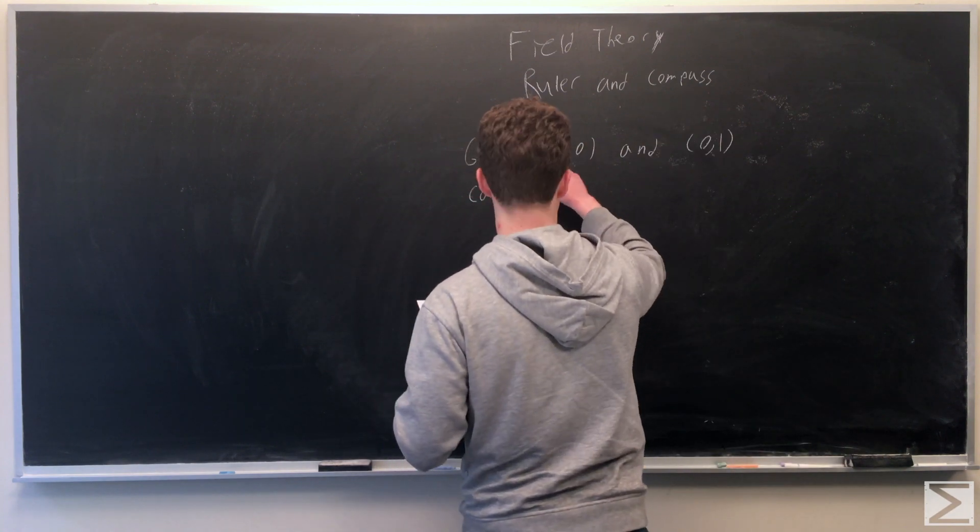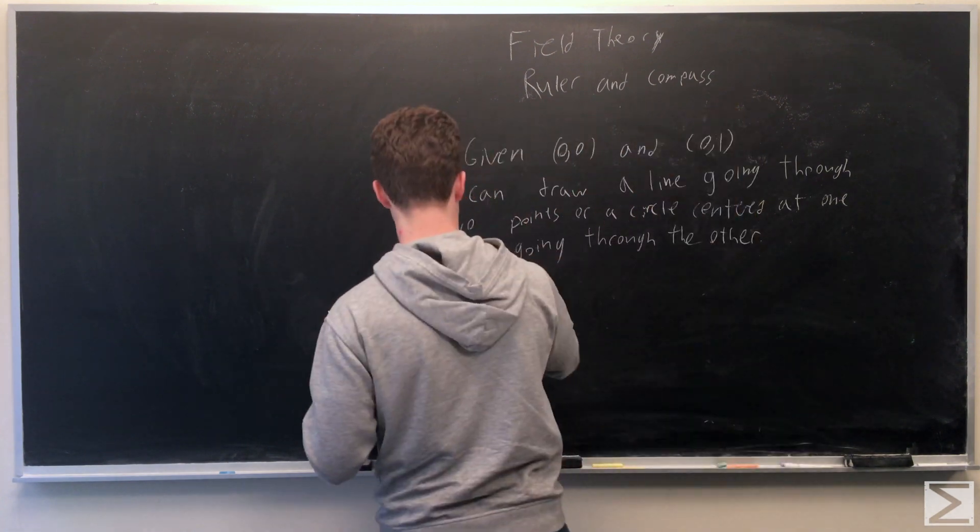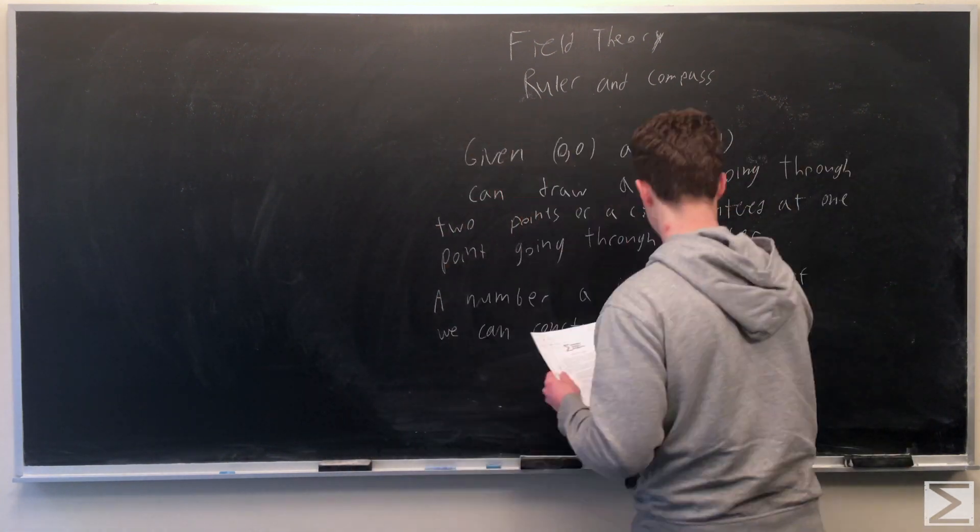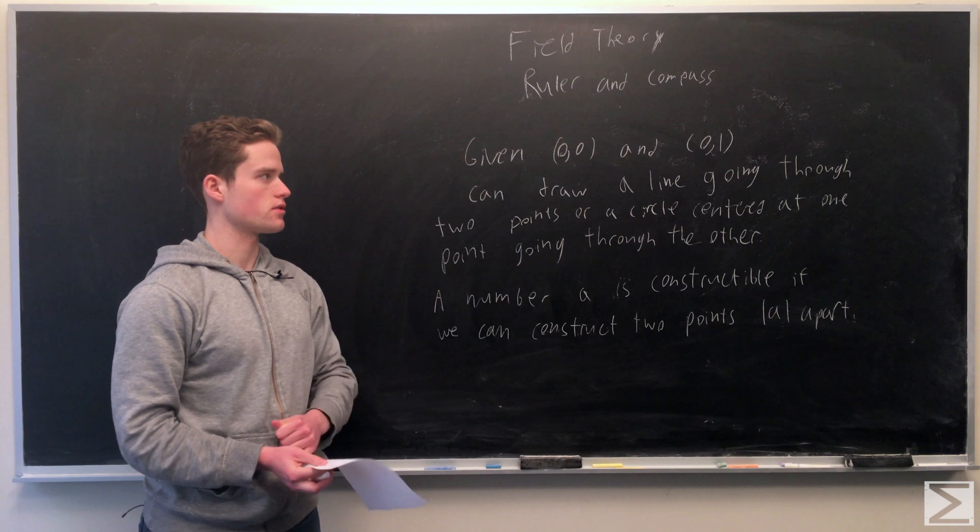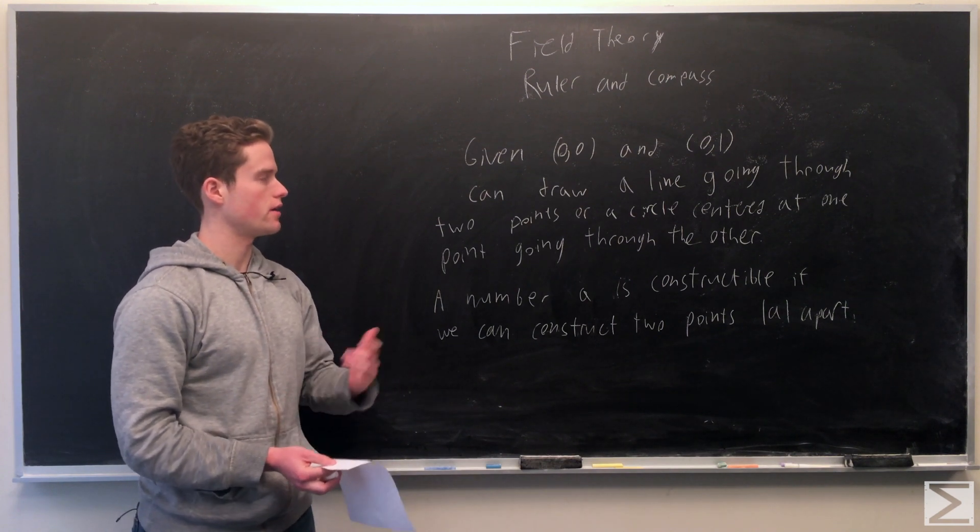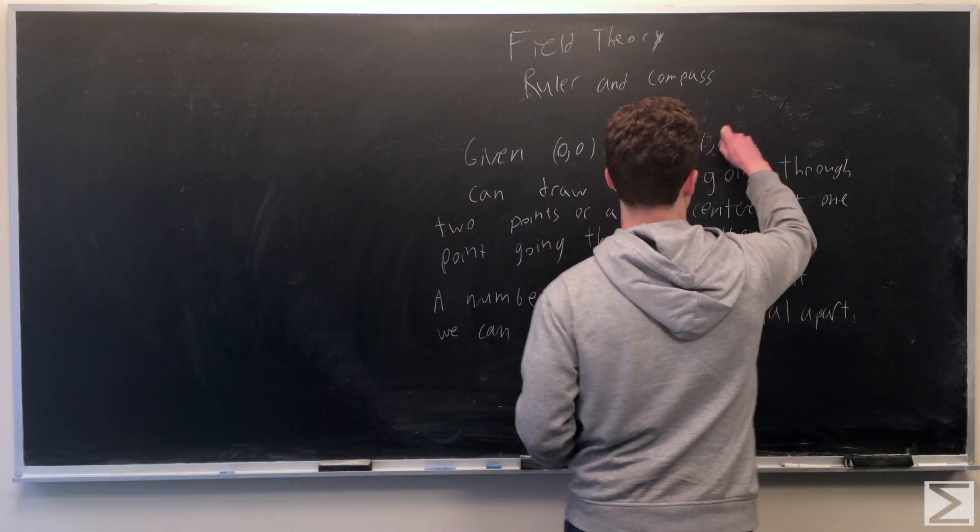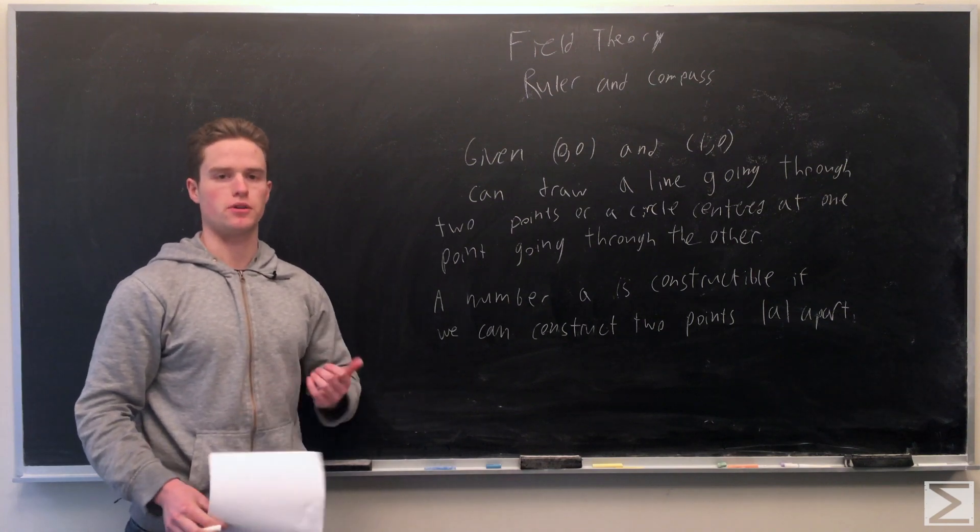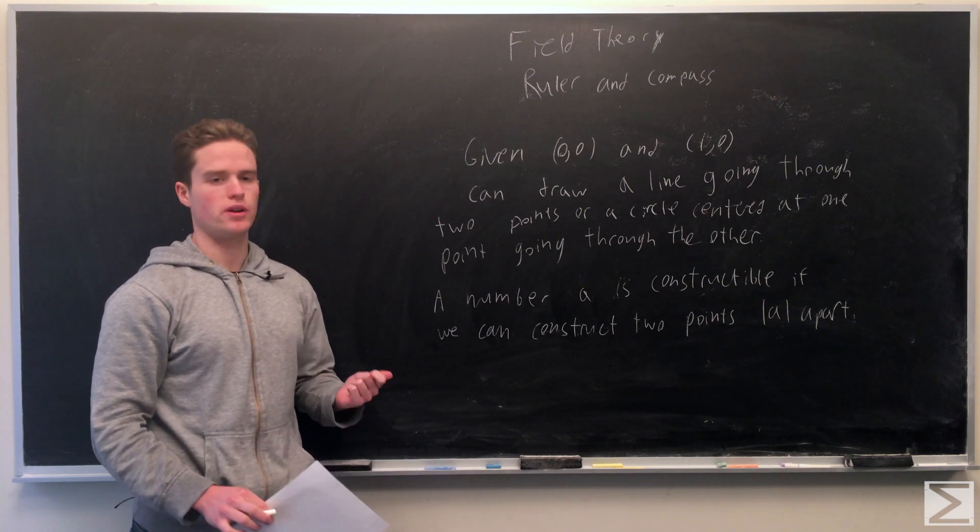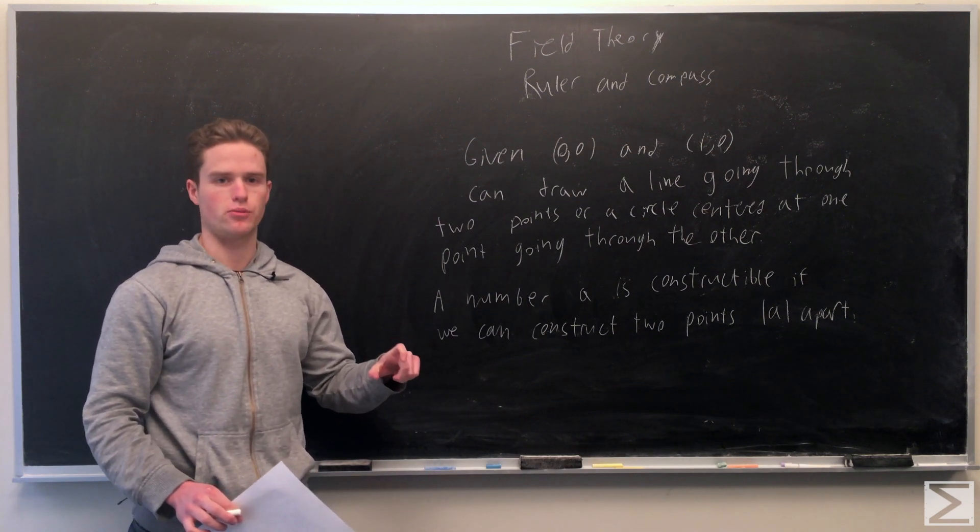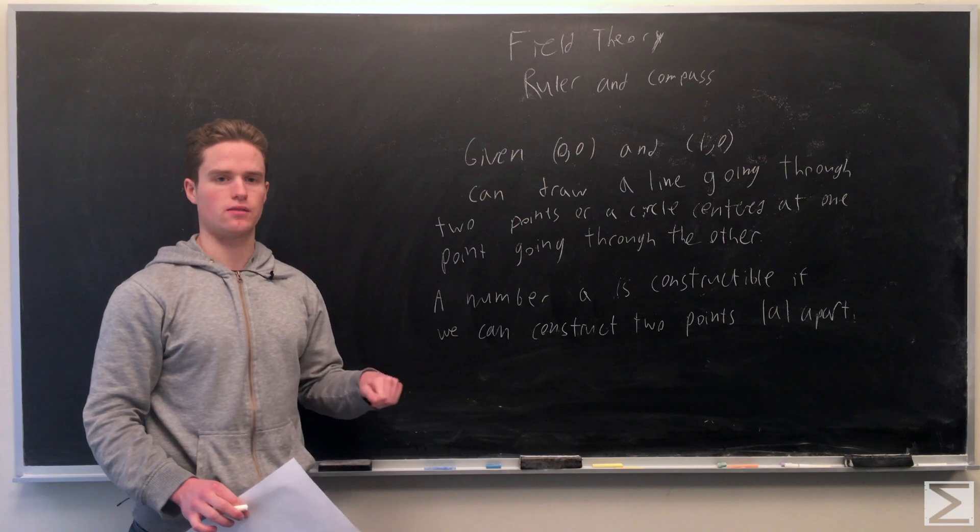We start with two points. We say they're at (0,0) and (0,1) in the plane. We can draw a line between any two points with our straight edge, we can make a circle centered at one point that has another point on it with our compass.